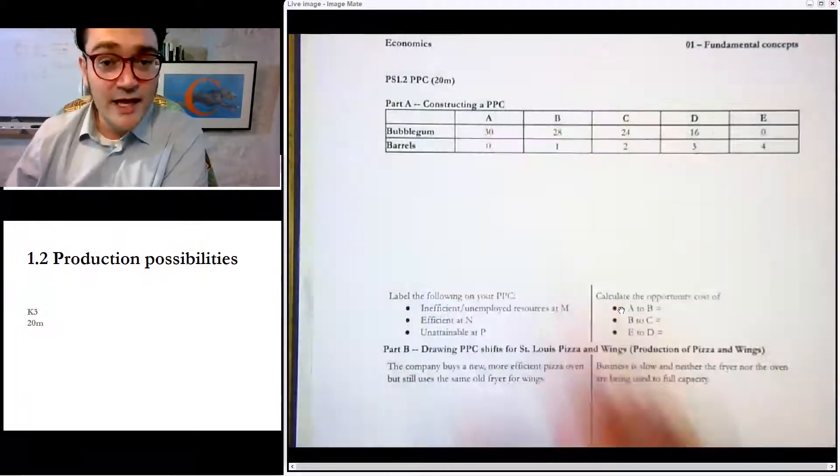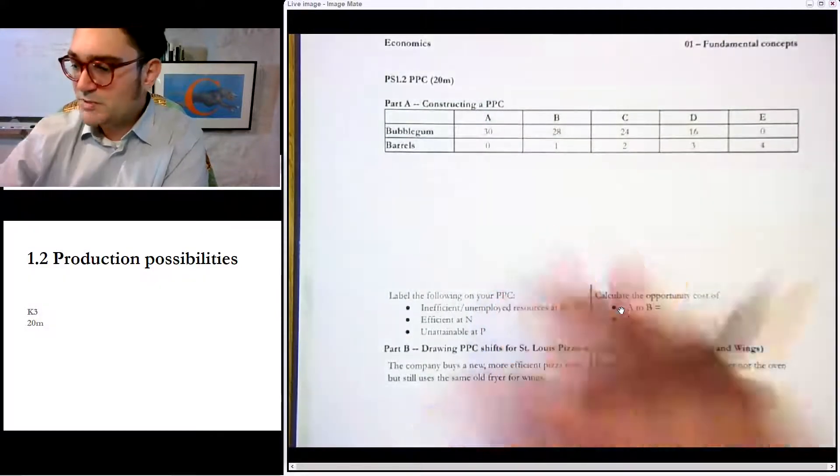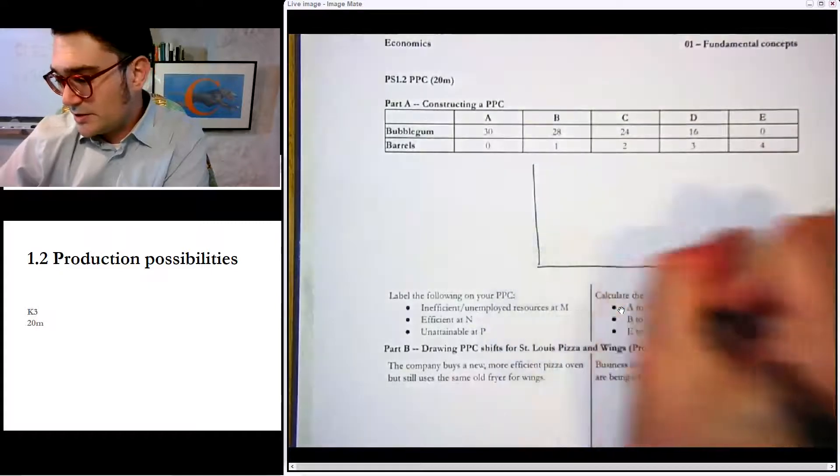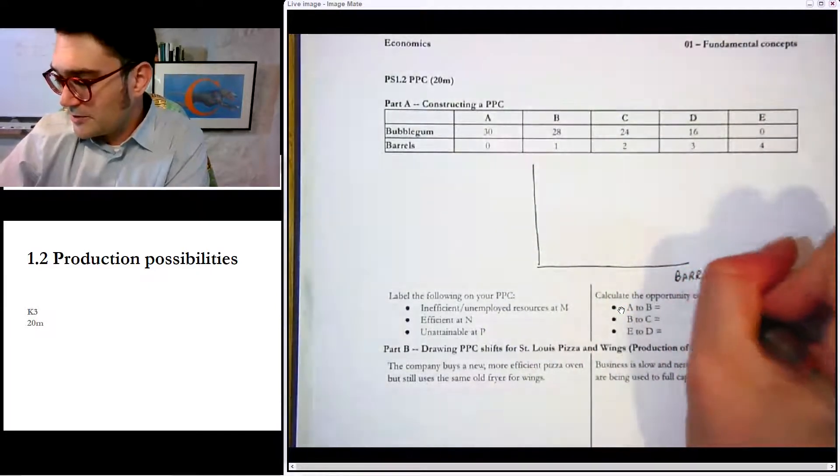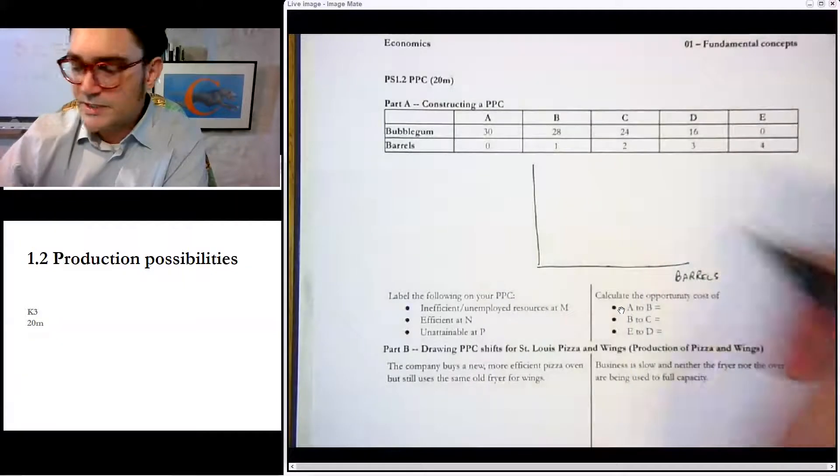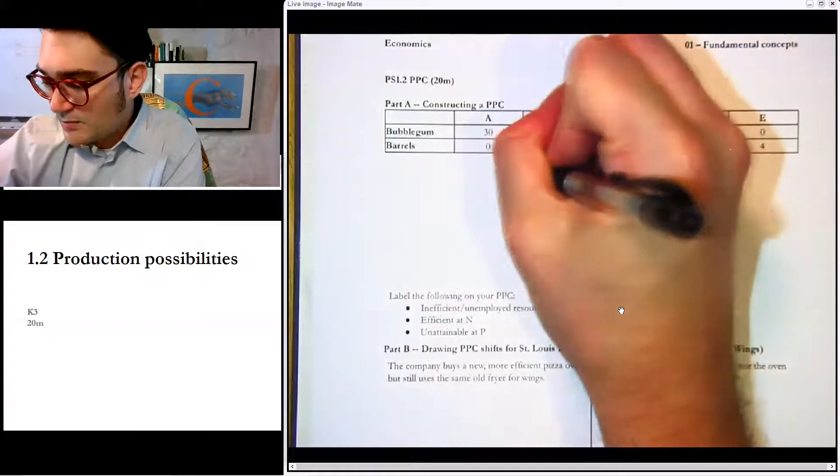The first part, part A, is actually constructing your very own PPC. So the first thing we're going to do is start here and we'll say those little root beer barrels, I don't know if you were into that nasty gross candy, but those little tiny root beer barrels, and then we'll put gum up here.